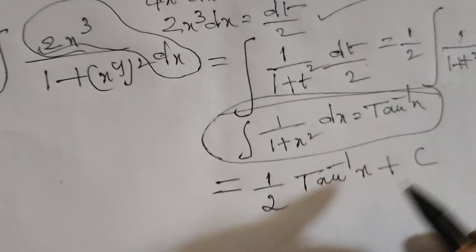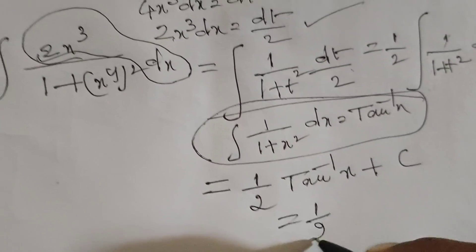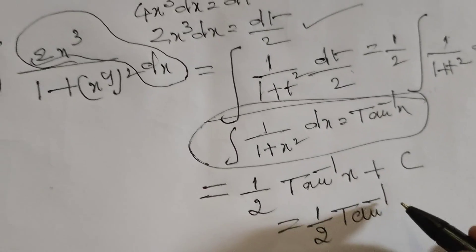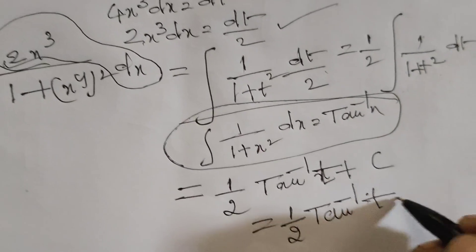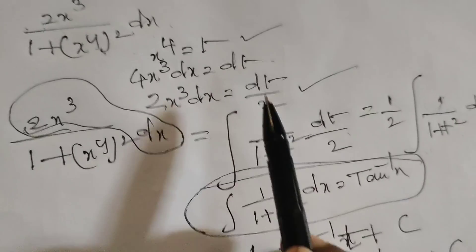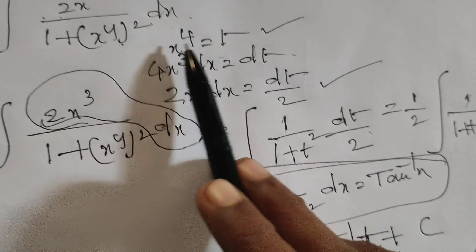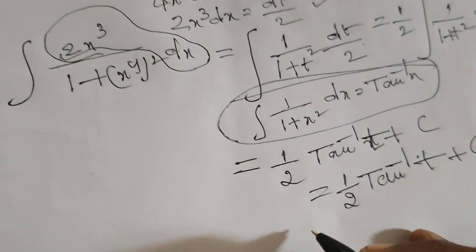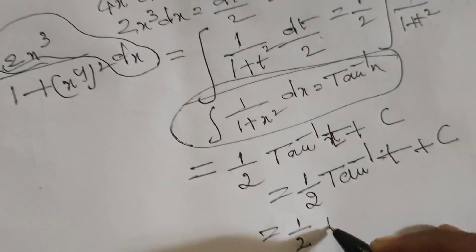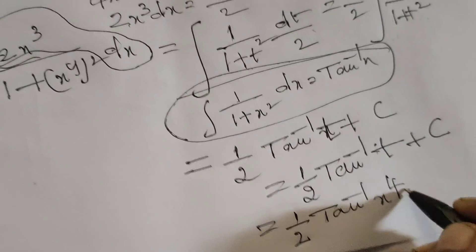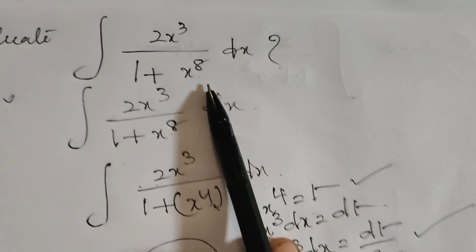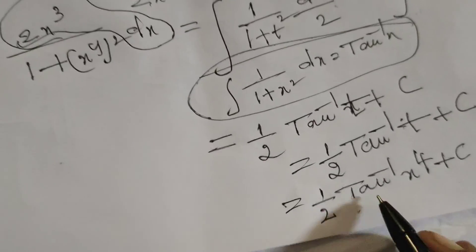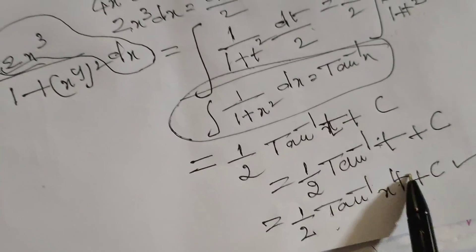After integration, adding the constant c, we get one half tan inverse t plus c. Since our substitution was t equals x to the power 4, substituting back gives one half tan inverse of x to the power 4 plus c. This is the solution of the given integral: the integration of 2x cubed by 1 plus x to the power 8 dx equals one half tan inverse of x to the power 4 plus c.